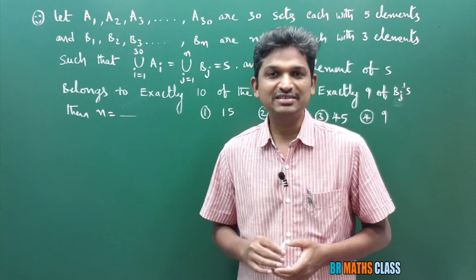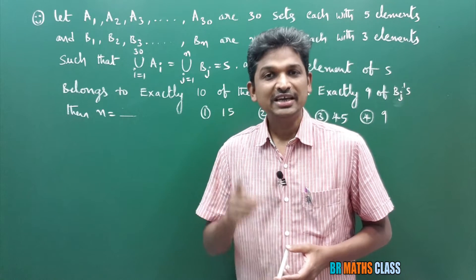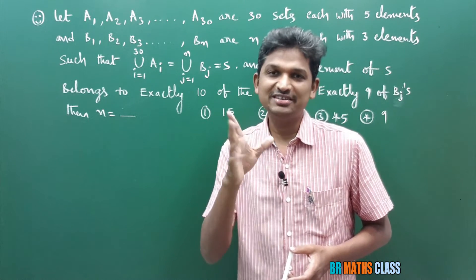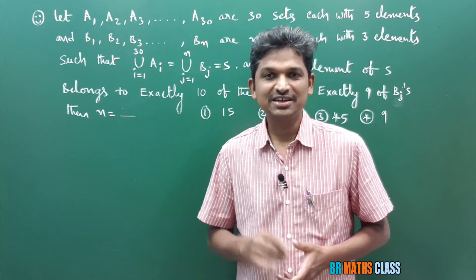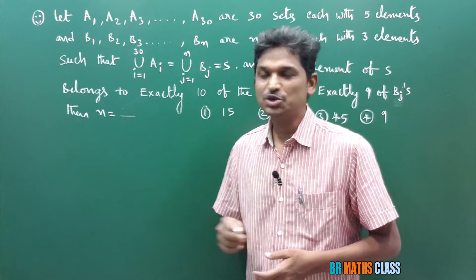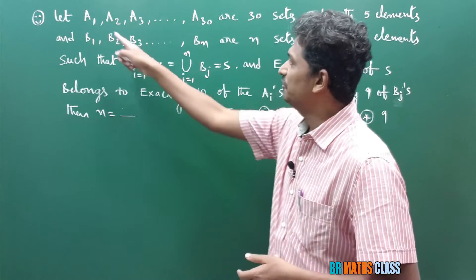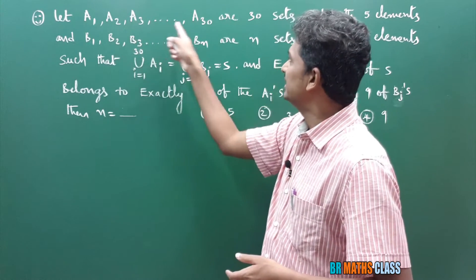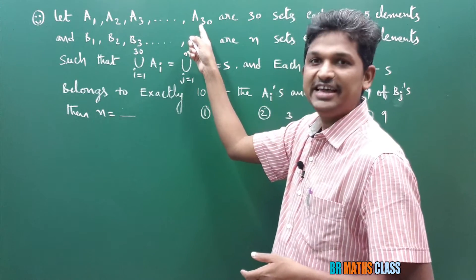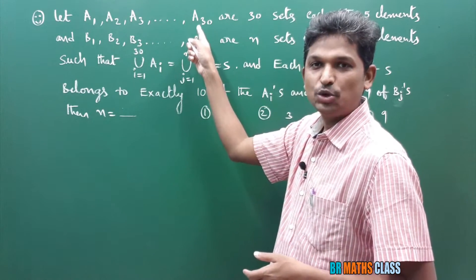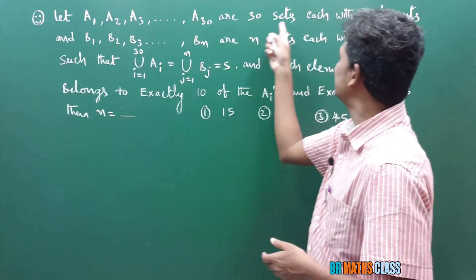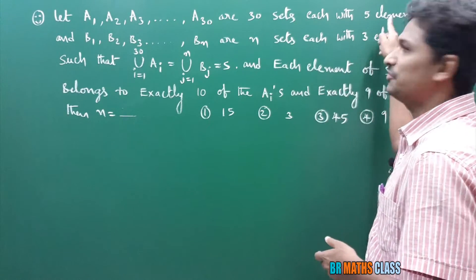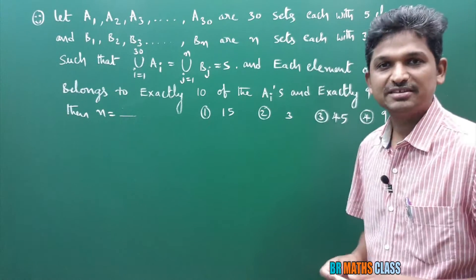First, we'll try to understand the question. Understanding the question is the tricky part. You observe this question — they have given A1, A2, A3, like that up to A30. Total 30 sets are there, each with 5 elements.